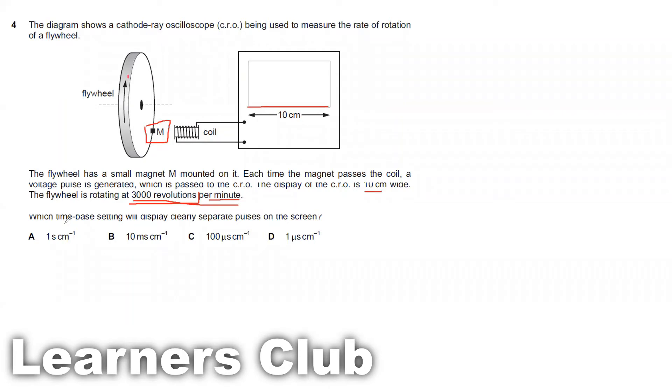Which time-based setting will display clearly separate pulses on the screen? We need to know the screen is 10 centimeter long. In one minute we are having 3000 revolutions. Now which time base will give a clear view of the pulse?